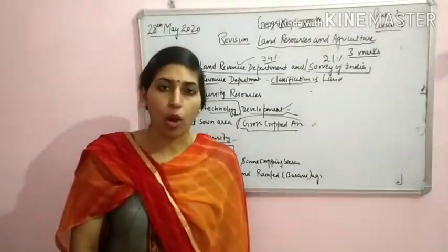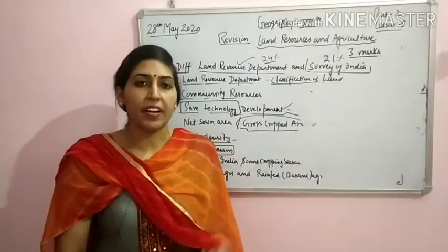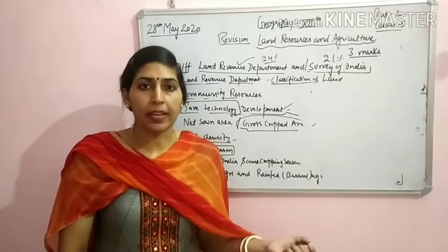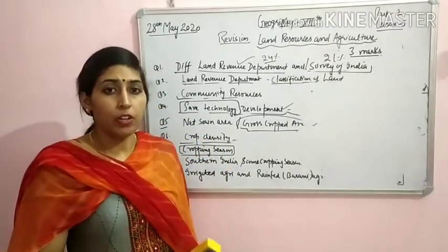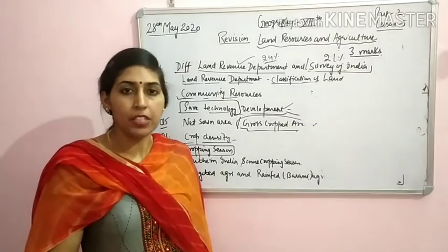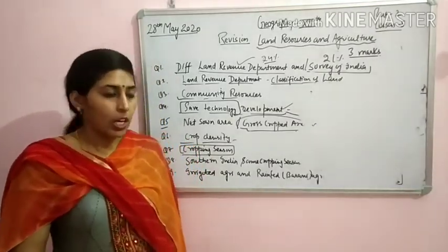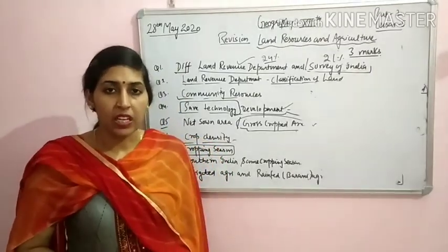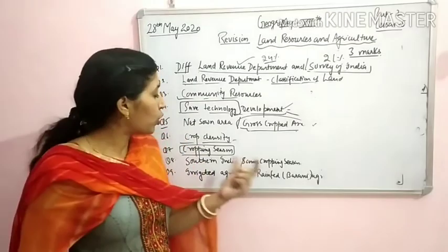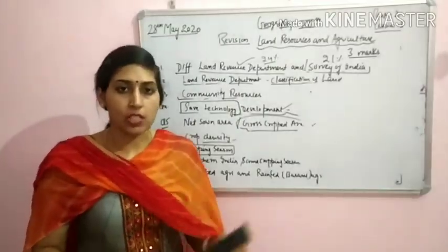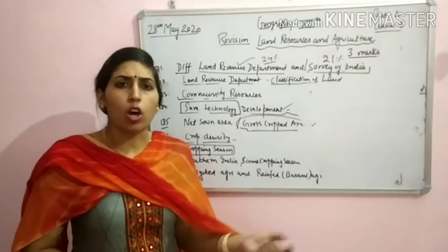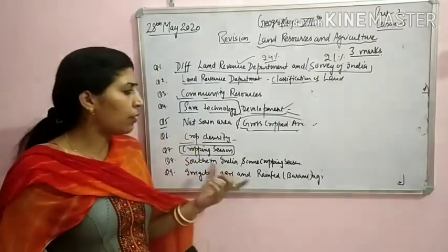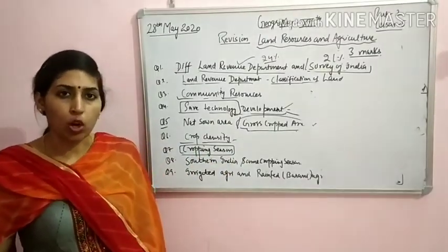Next is Rabi — Rabi crops are sown in October and November and harvested in March to April. These are the winter crops — mustard, gram, wheat are the Rabi crops. In the summer season, the two-month gap between Rabi and Kharif, that is April to July, Zaid crops are grown — normally fruits and vegetables like cucumber, watermelon, tomato, peas. These are called Zaid crops.